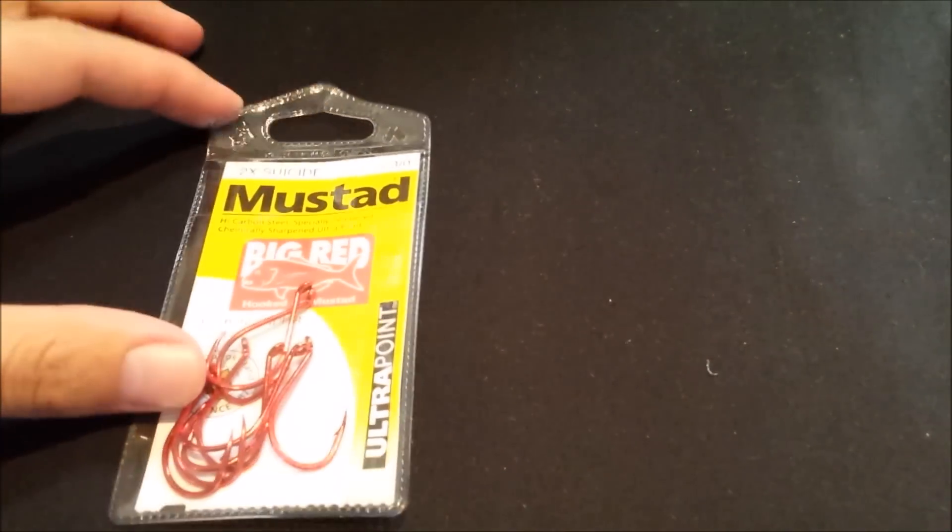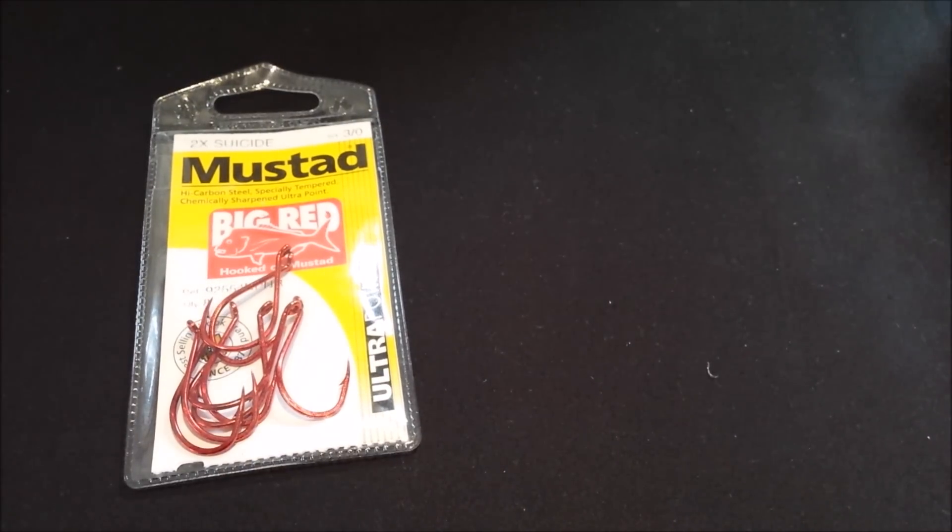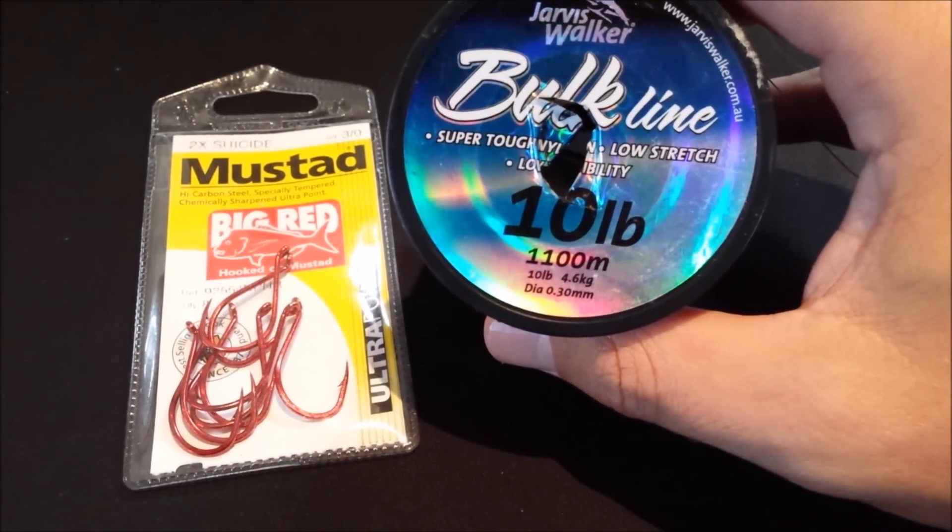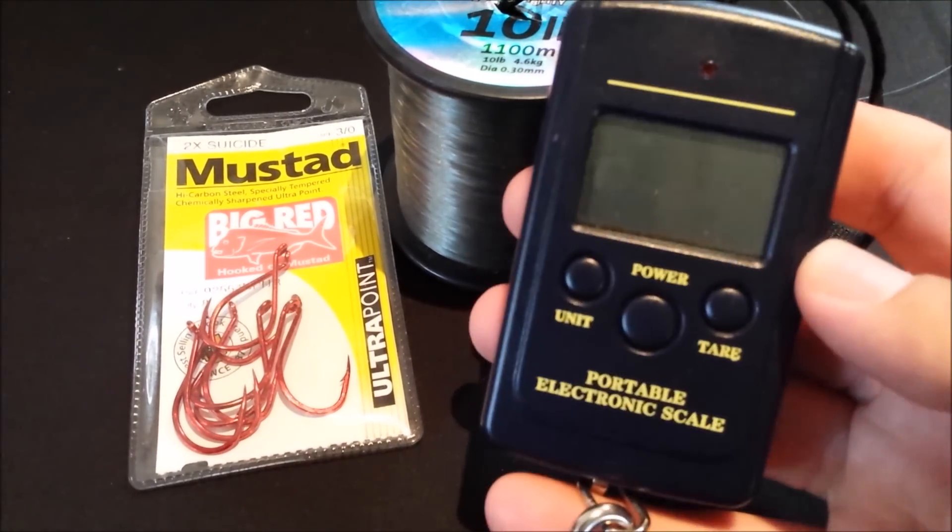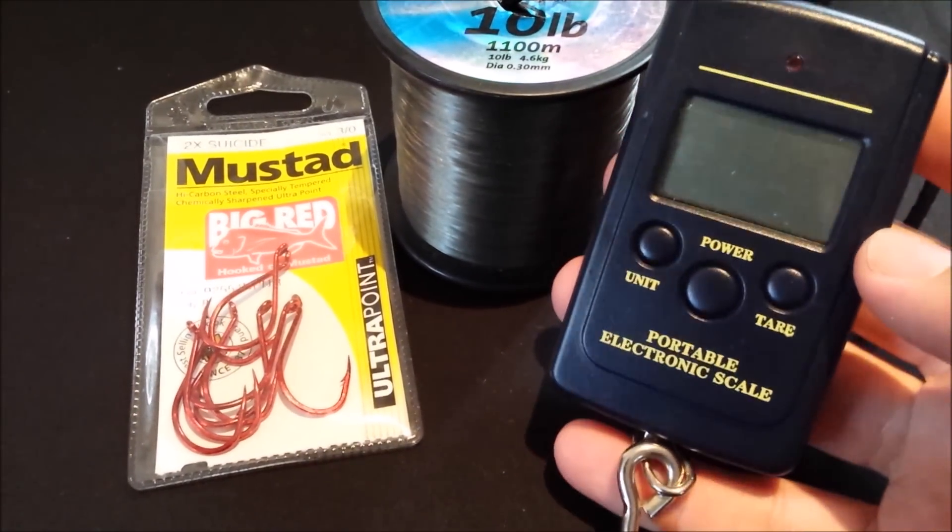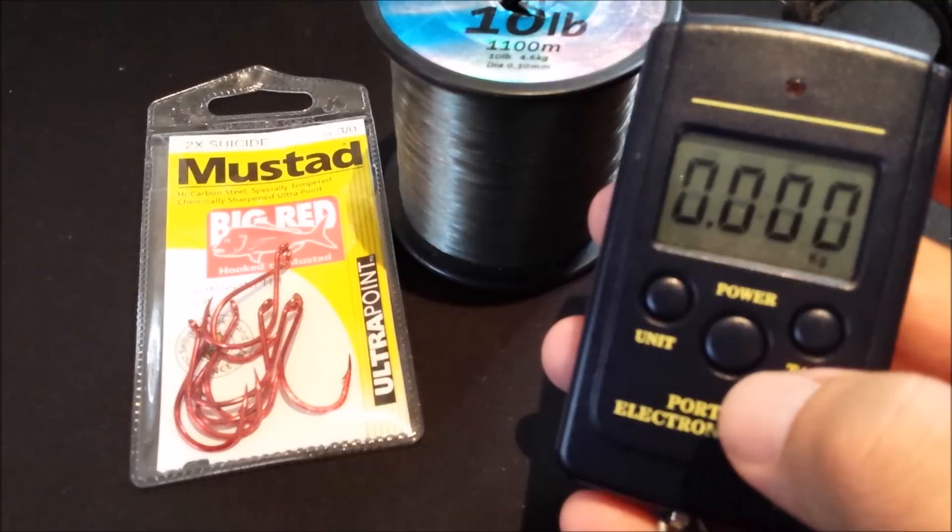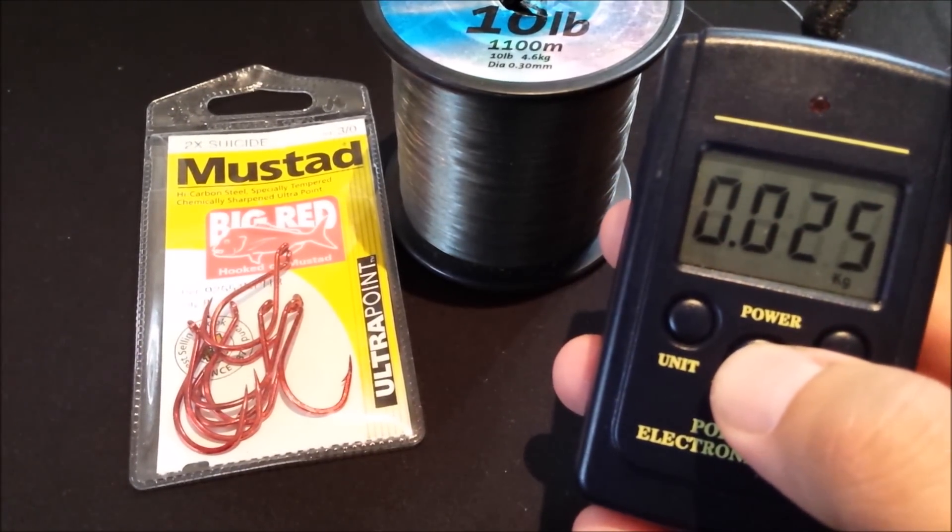Today we're going to use some mustard fishing hooks that I like to use for gropers and we're going to use monofilament 0.3 millimeters 4.6 kilograms. We're going to use a scale to test which is the strongest fishing knot.